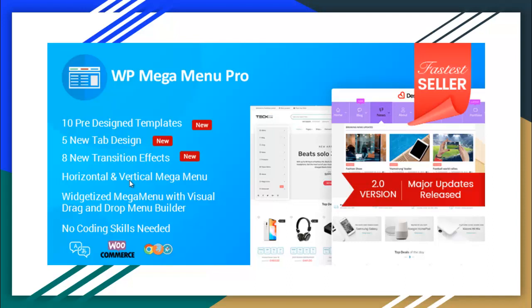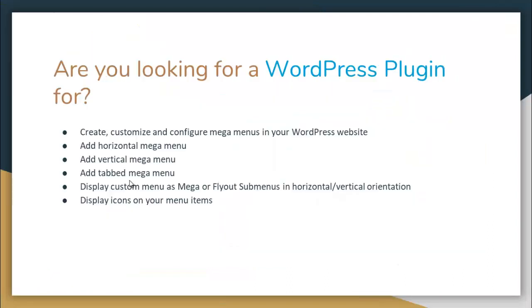It is a built-in visual Mega Menu Builder plugin with features to display menus best suited for any website. So if you are looking for a WordPress plugin which will create, customize and configure Mega Menus in your WordPress website — add horizontal Mega Menu, vertical Mega Menu and tab Mega Menu, display custom menus as Mega or fly-out sub-menus in horizontal or vertical orientation, and display icons on your menu items — then this is the perfect plugin for you.